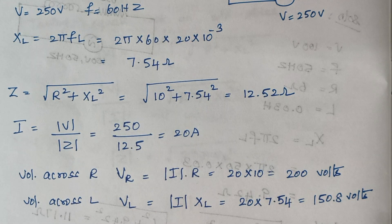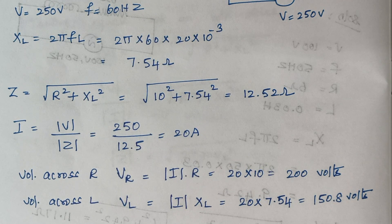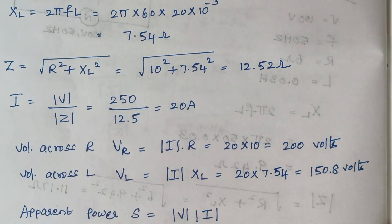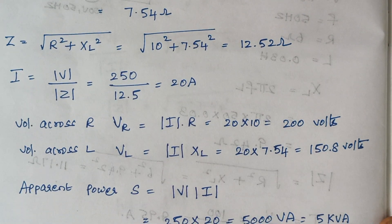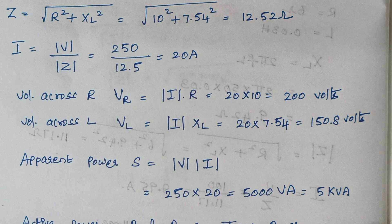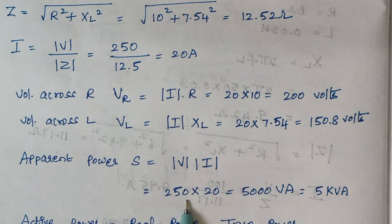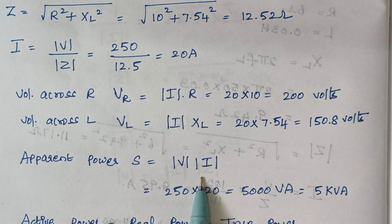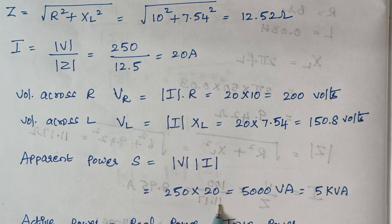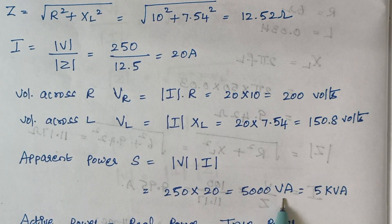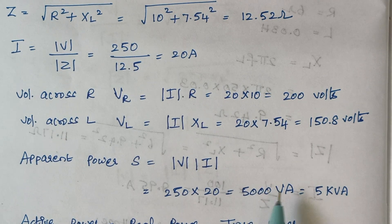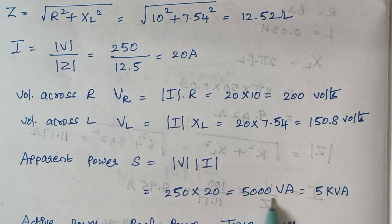Now we need to calculate apparent power, active power, and reactive power. Apparent power is given by the formula V × I. V is 250 and I we had already calculated as 20, so 250 × 20 = 5000 volt amps, which can be rewritten as 5 kVA.